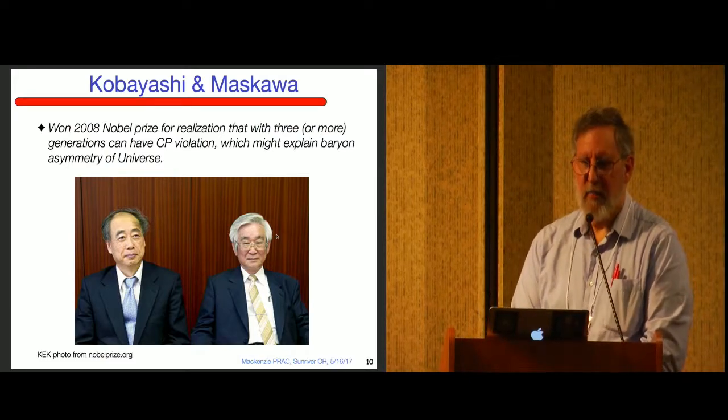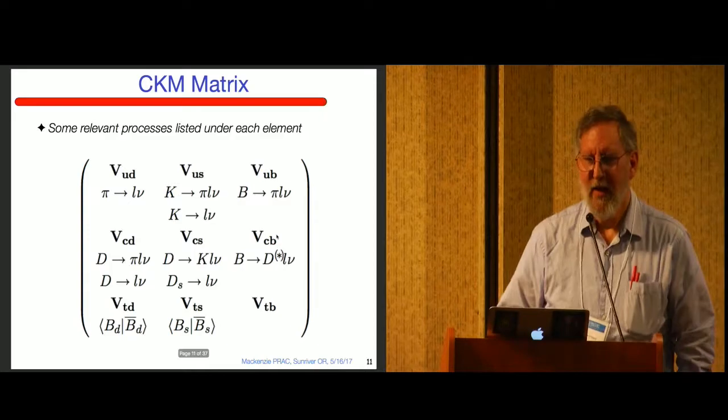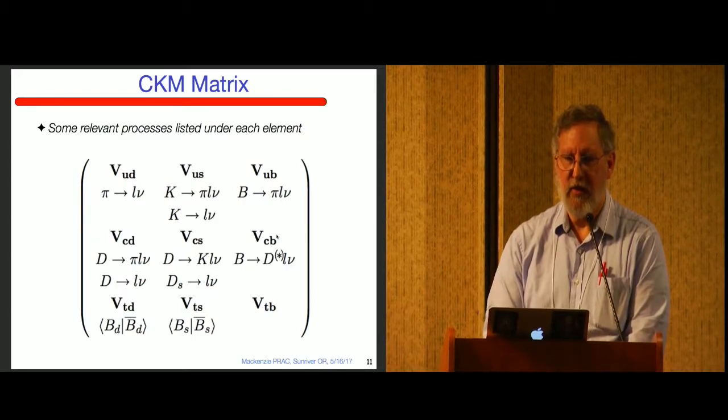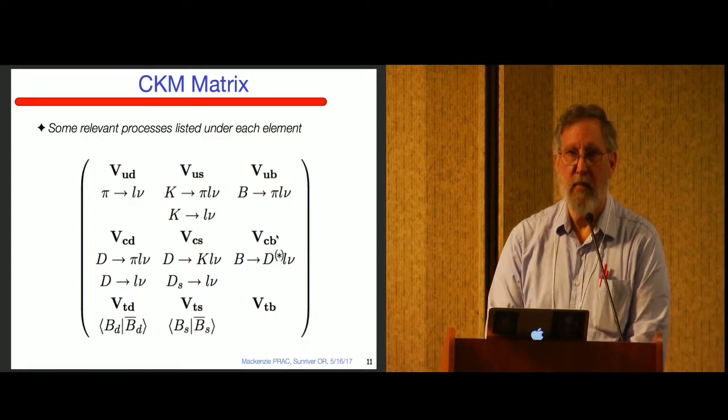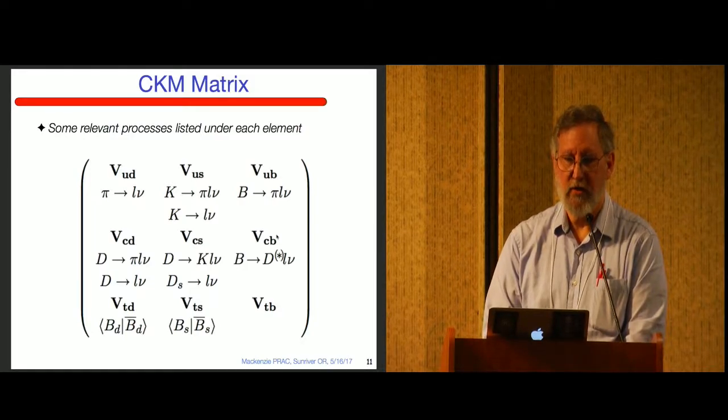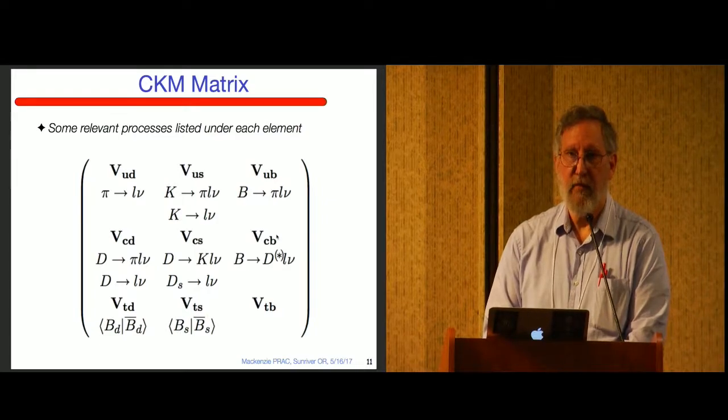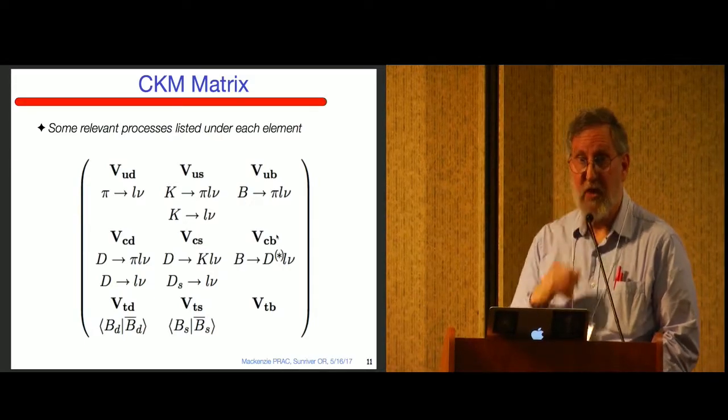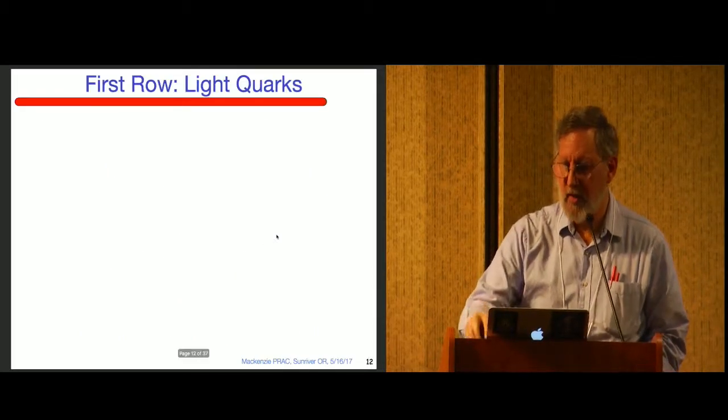This is a picture of Kobayashi and Maskawa after they got the Nobel Prize. This is the matrix. The part in bold is actually the matrix. VUD, VUS, VUB, et cetera. Each element of the matrix on the left is labeled by a charge two thirds quark: up, charm, and top. The right hand indices are down, strange, and bottom, which are the charge minus a third quarks. It's a three by three matrix. Under the bold, I have some physical processes, decays and mixing. These processes depend upon those matrix elements. We're going to talk about pion decay into a lepton and a neutrino and some other decays.